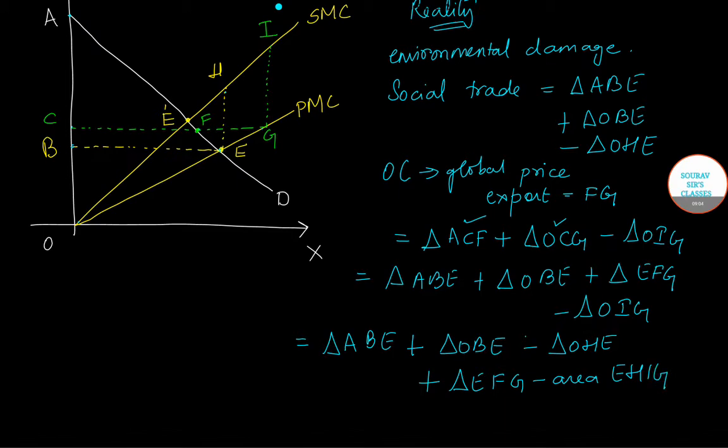I hope this is crystal clear as to why I have done this. I have done this so that I can use the pre-trade situation welfare also. So it is given by closed economy welfare, that is the first three parts, plus triangle EFG, and from this you need to less the area of EHIG.